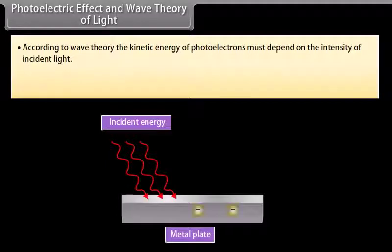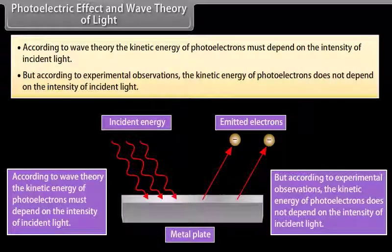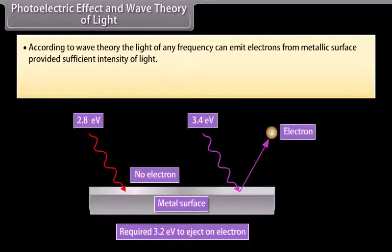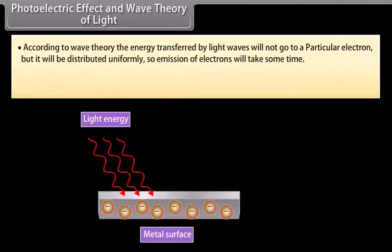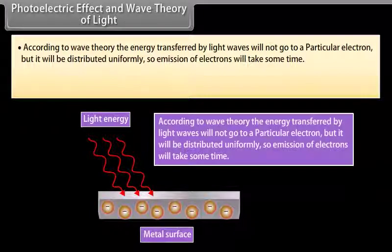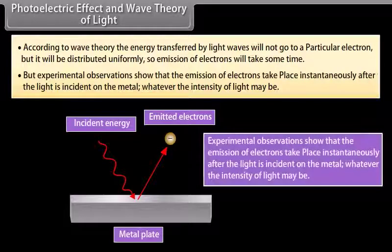According to wave theory, the kinetic energy of photoelectrons must depend on the intensity of incident light, and light of any frequency should emit electrons provided the intensity is sufficient. However, experimental observations show that light of frequency less than the threshold frequency cannot emit electrons regardless of intensity. Wave theory also predicts that energy is distributed uniformly and emission would take some time, but experimentally, emission occurs instantaneously after light is incident on the metal.